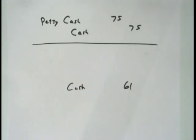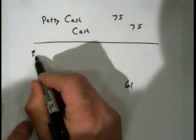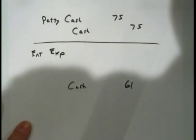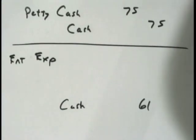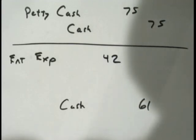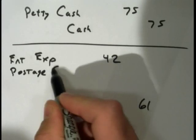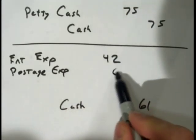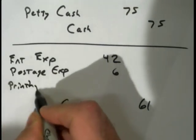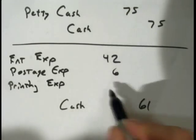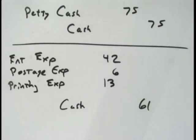The next step is to go through the receipts and record them in the books. We have entertainment expense for $42 for those two items, postage expense for $6, and printing expense for $13. The third step is to ask: does that journal entry balance? It does balance, so we don't need to debit or credit cash over and short. Do these steps in order to avoid errors.